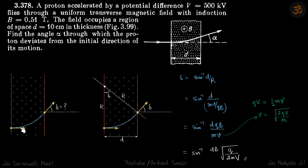So a proton enters a region of magnetic field and it leaves that region after some time. We are asked what is this angle of deviation.